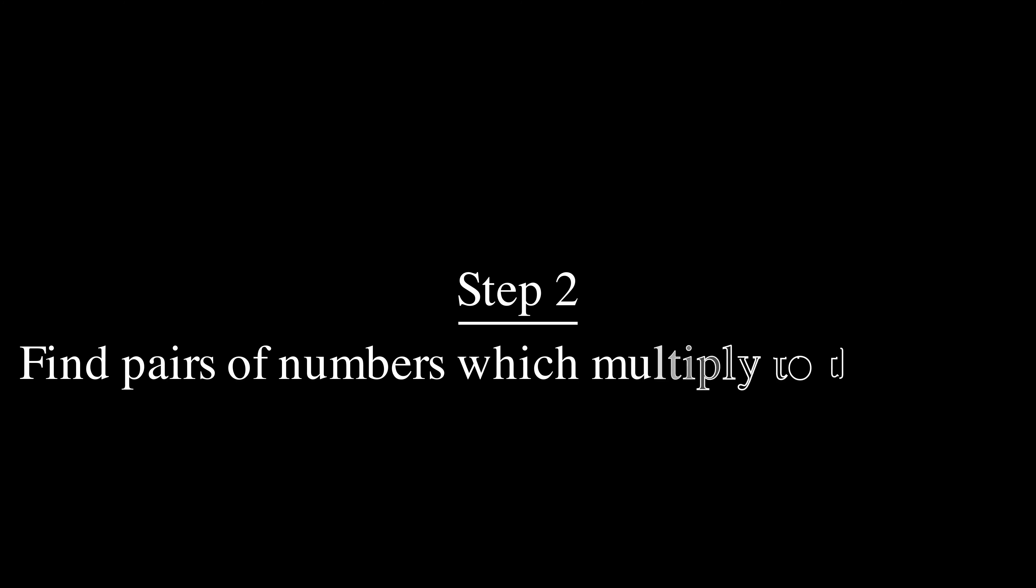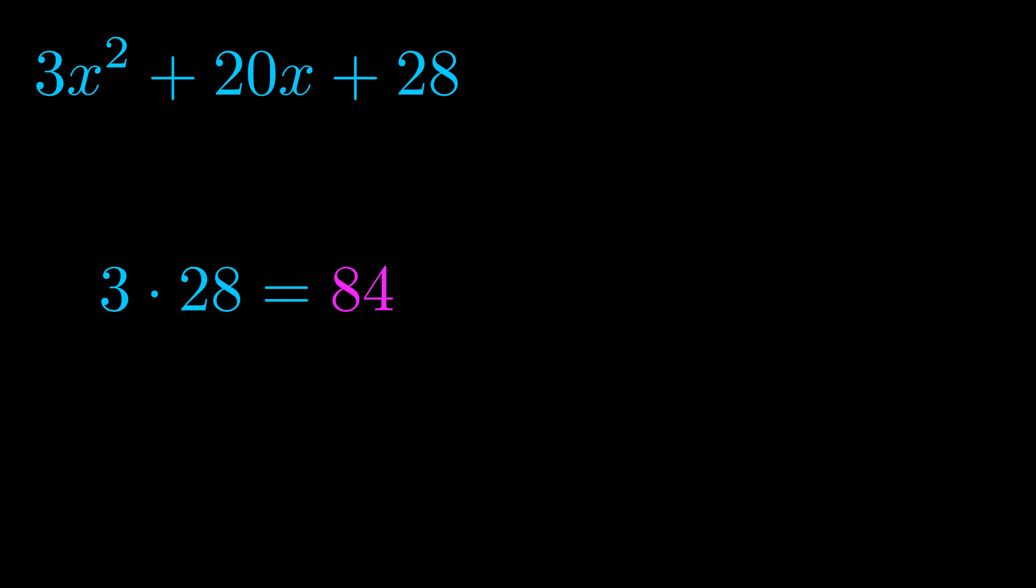Step two is to try to find all of the pairs which multiply to this number. Now turns out you don't really need to find all of them but go ahead and write down as many numbers as you can that multiply to the magenta value for now. Pause the video and resume when you're ready to continue.